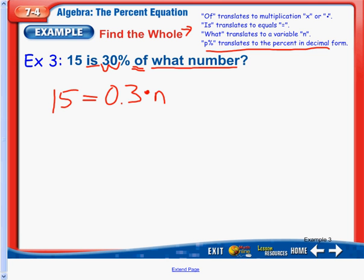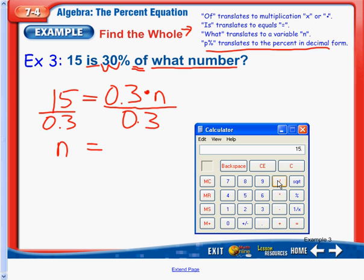So, looking at this problem here, we have 15 equals 3 tenths times n. We don't have to readjust our order here. So, we're just going to start by dividing by 3 tenths from both sides, so we can solve for n. I'll write n on the left here. So, we've got 15 divided by 3 tenths, again, using our calculator.